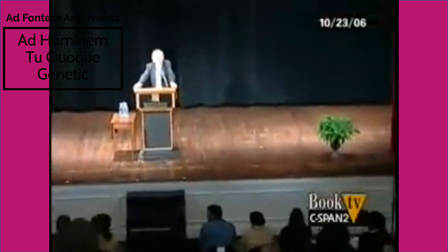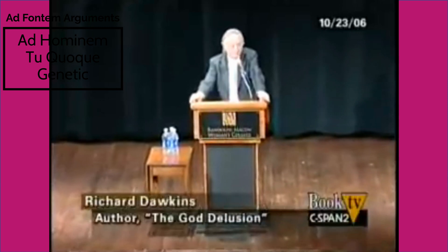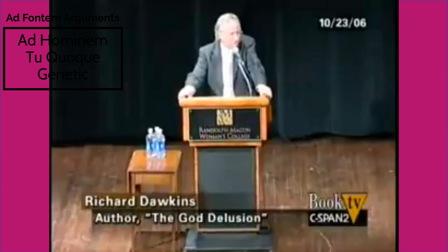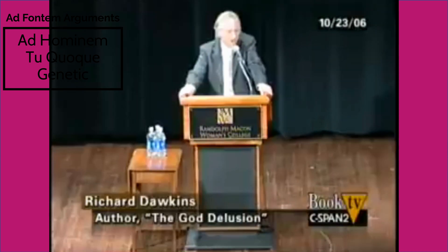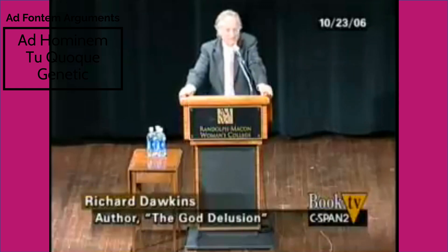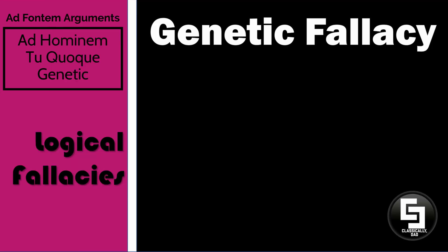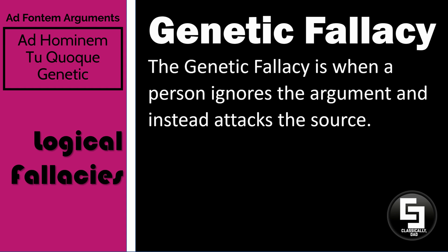'What if you're wrong?' 'Well, what if I'm wrong? I mean, anybody could be wrong. We could all be wrong about the flying spaghetti monster and the pink unicorn and the flying teapot.' 'You happen to have been brought up, I would presume, in the Christian faith. You know what it's like not to believe in a particular faith because you're not a Muslim. You're not a Hindu. Why aren't you a Hindu? Because you happened to have been brought up in America, not in India. If you'd been brought up in India, you'd be a Hindu. If you were brought up in Denmark in the time of the Vikings, you'd be believing in Wotan and Thor. If you were brought up in classical Greece, you'd be believing in Zeus. If you were brought up in Central Africa, you'd be believing in the great juju up the mountain.' Richard Dawkins ignores the question of whether God exists and argues instead that the source of this person's belief system is their Christian upbringing. The genetic fallacy is when a person ignores the argument and instead attacks the source.